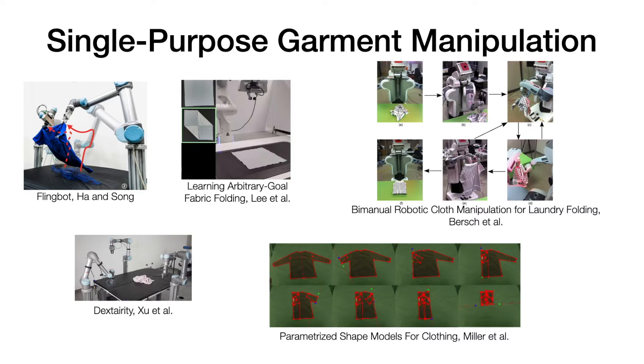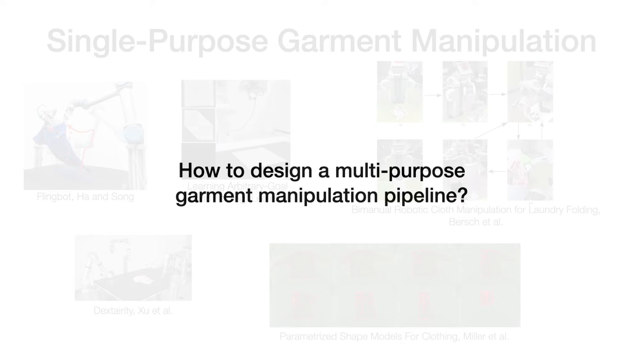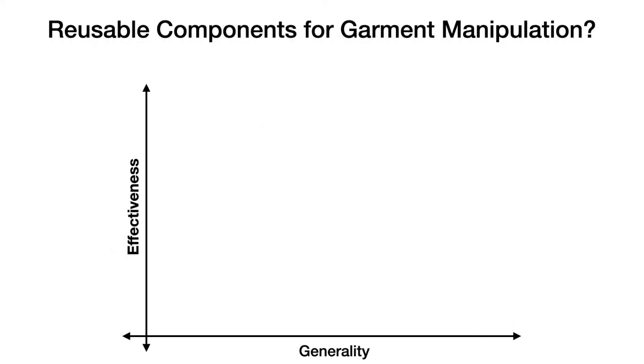To better reuse these efforts, we ask the question, how can we design a multipurpose garment manipulation pipeline? The answer lies in the right trade-off between specificity and generality, indicated by the horizontal axis.